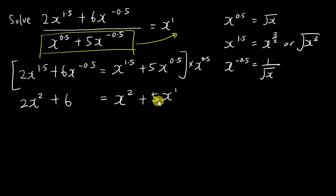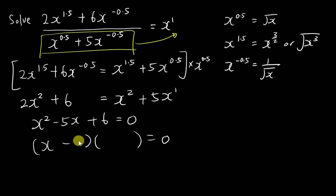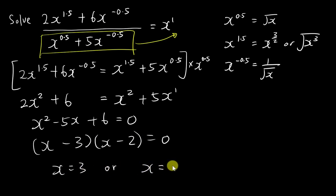Now I move everything to one side — you should be able to see it's just a quadratic equation: 2x squared minus x squared minus 5x plus 6 equals 0. I can factorize it easily as (x minus 3)(x minus 2) equals 0, giving x equals 3 or x equals 2.